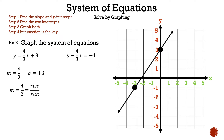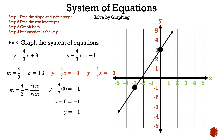Now let's graph the second equation, y minus 4 thirds x is equal to negative 1. We'll find two points to graph. Let's substitute 0 in for x: y minus 4 thirds times 0 is equal to negative 1. 4 thirds times 0 is 0, so y is equal to negative 1. Our point is 0, negative 1. Let's plot the point on the graph. Next, let's substitute 3 in for x: y minus 4 thirds times 3 is equal to negative 1. 4 thirds times 3 is 4. Adding 4 to both sides gives y is equal to 3. Our point is 3, 3. Let's plot the point and draw the line.